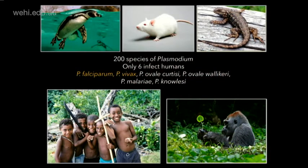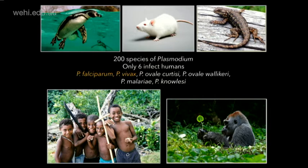Malaria is caused by the species Plasmodium, which has 200 species. Very interestingly, out of those 200, only six actually infect humans: falciparum and vivax, which I'll focus on today, and also ovale, malariae, and knowlesi — which is a zoonotic malaria. This raises a fundamental biological question: what makes these six human malaria species special, and how do they only recognize human cells? That's the fundamental question we're interested in.